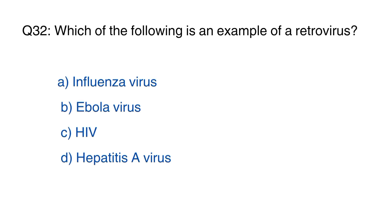Question number 32. Which of the following is an example of a retrovirus? The right option is C, HIV.